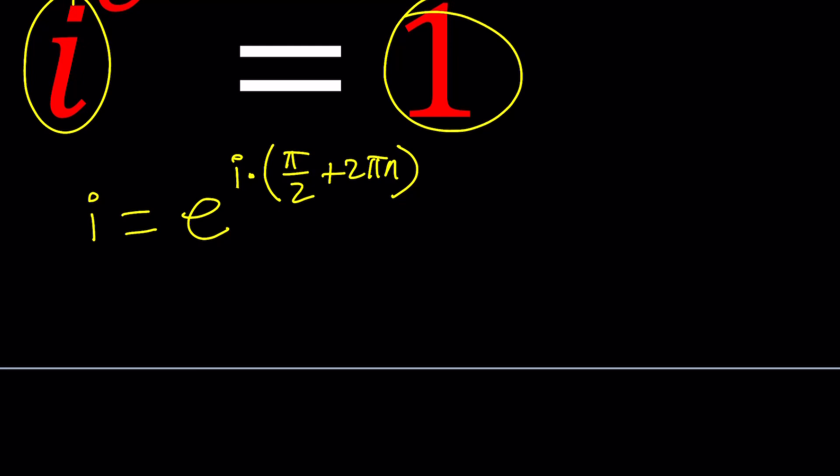Okay, this is i, and 1 can be written as e to the power i times 2 pi k. And then k are integers and they don't have to be the same. Okay great, let's put it together.